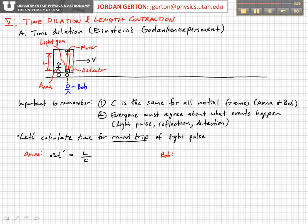We want the detection to happen at the same place as the light pulse emission, so we'll calculate the round-trip. You'll see why we do this later. We can simplify with a little algebra and write this expression by squaring it: 2∆t' = 2L/C.